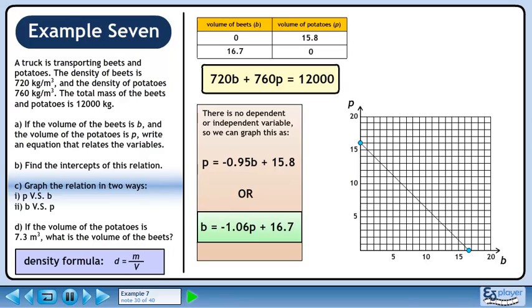Now we'll graph b equals minus 1.06p plus 16.7. Swap the axis labels and replot the points. The lines look very similar, but that's just because the intercept values of 15.8 and 16.7 are so close. If you look carefully, you'll see that the intercepts have indeed been swapped.